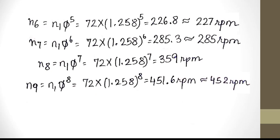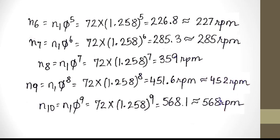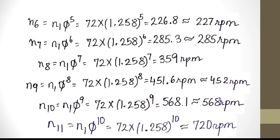n9 = n1 × φ⁸ = 72 × 1.258⁸ = 451.6 rpm, rounded to 452 rpm. n10 = n1 × φ⁹ = 72 × 1.258⁹ = 568.1, rounded to 568 rpm. The last number, n11 = 720 rpm.